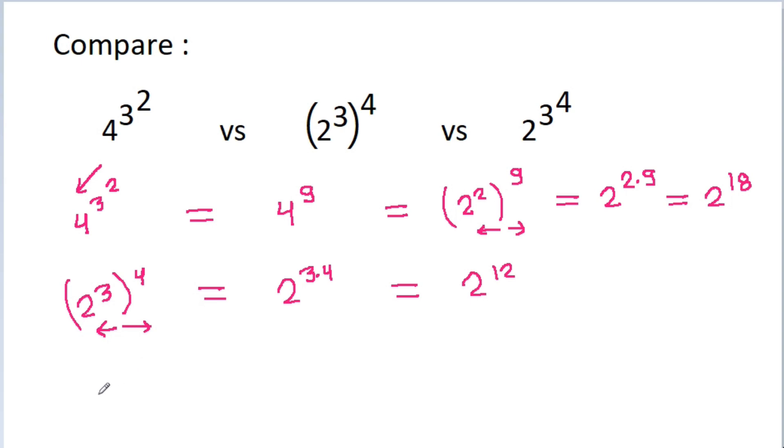The third expression is 2^(3^4). Since 3^4 = 81, this equals 2^81.